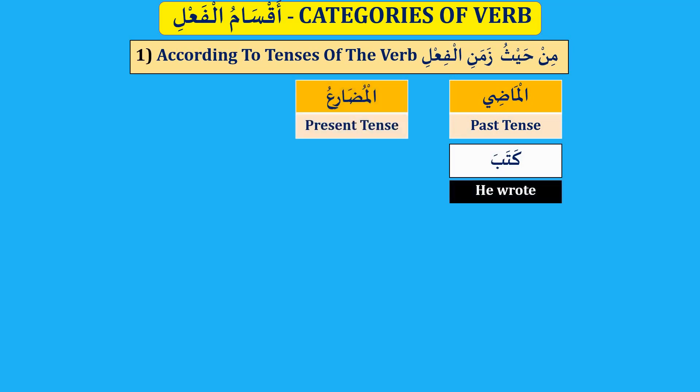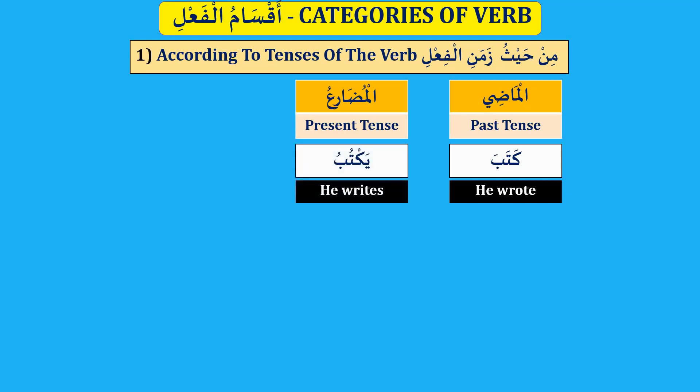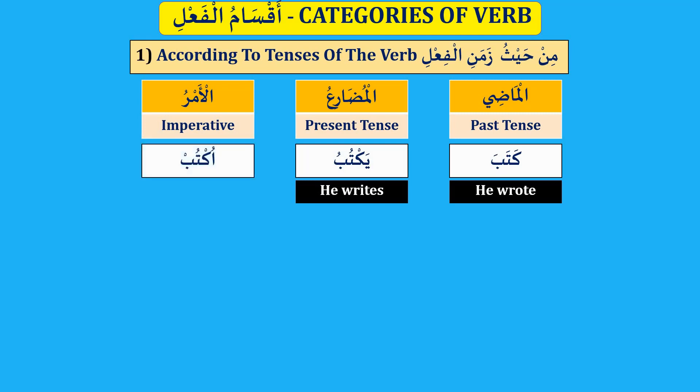Al-Mudari'a, present tense — yaktubu, he writes or he is writing. Al-Amr, imperative or command — uktub, write.